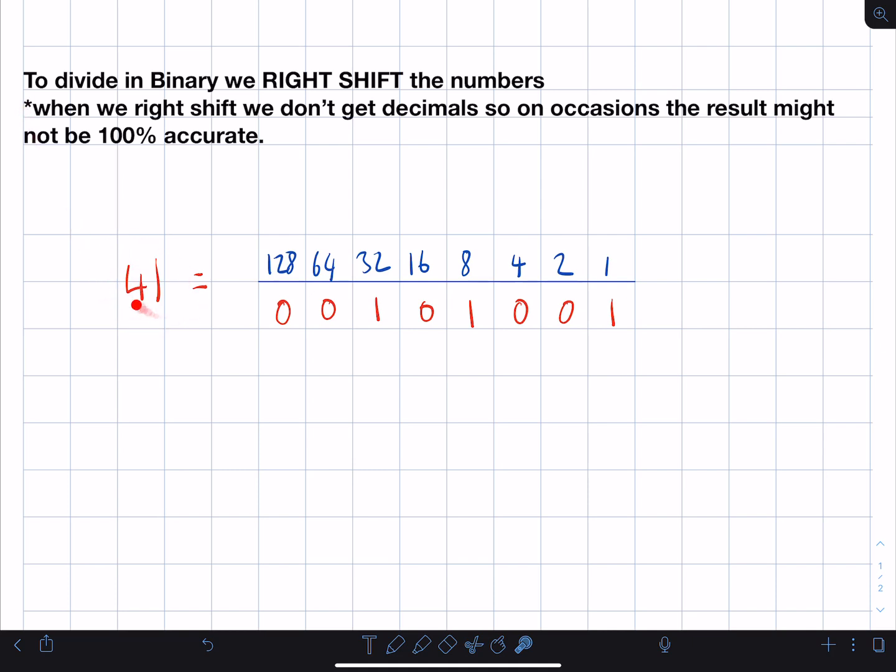I've got here the binary for 41, okay, so 32 plus 8 plus 1. So what we're going to do is we're going to right shift this number and see what happens. So this is what we do: we get our numbers, and let's say in this case we want to divide by 2.